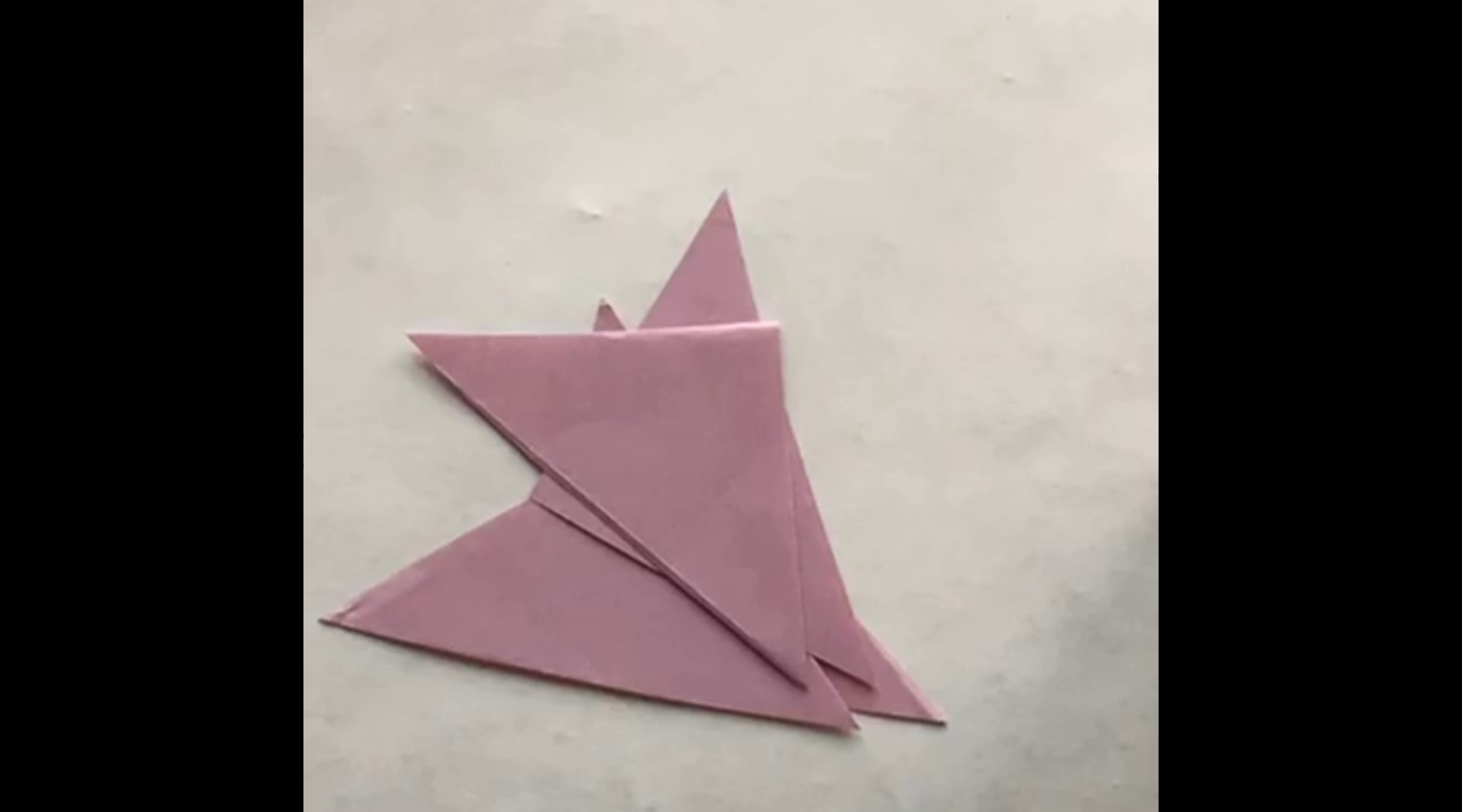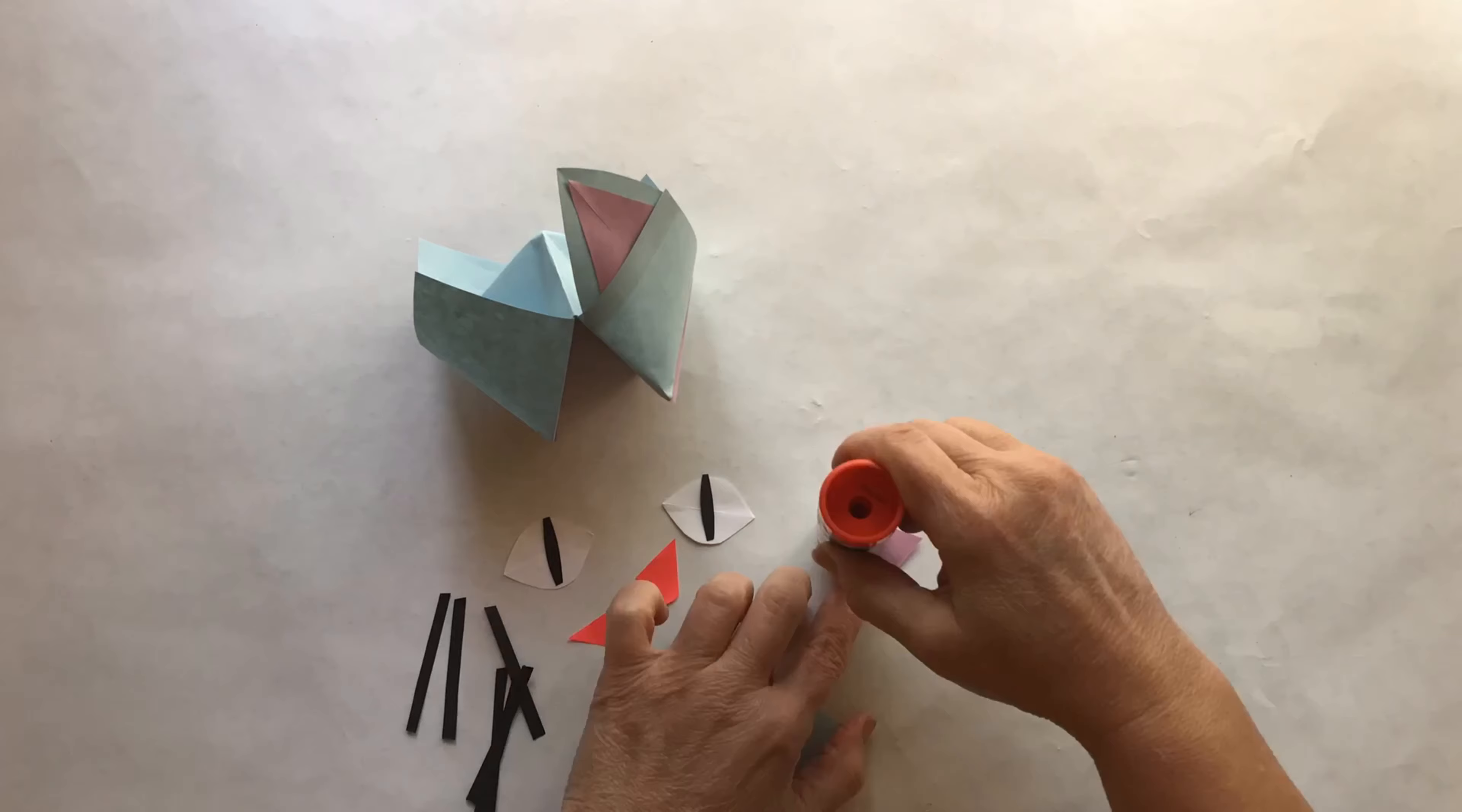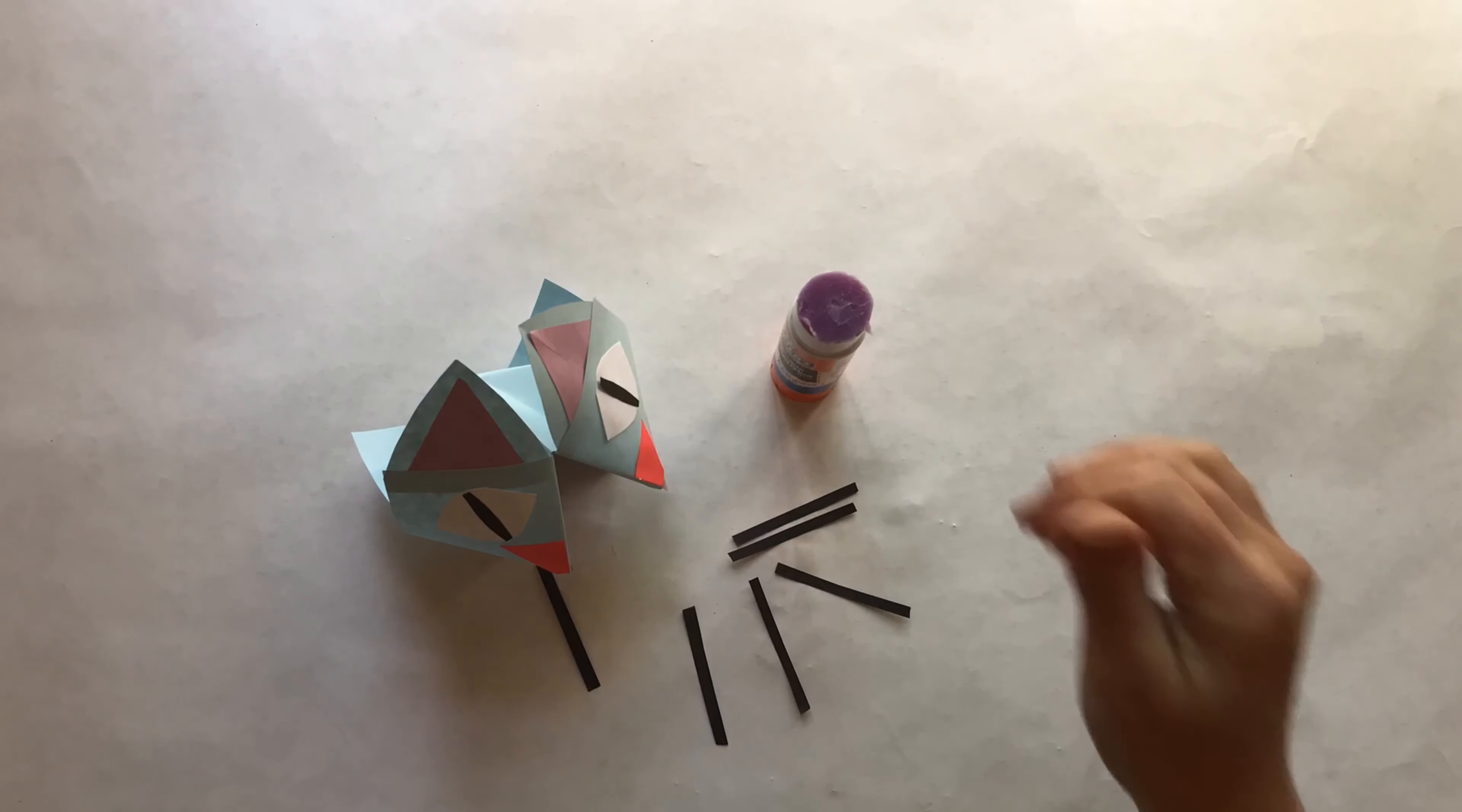The triangles will be glued on the inside like so. Next the ears, the nose, and the eyes.